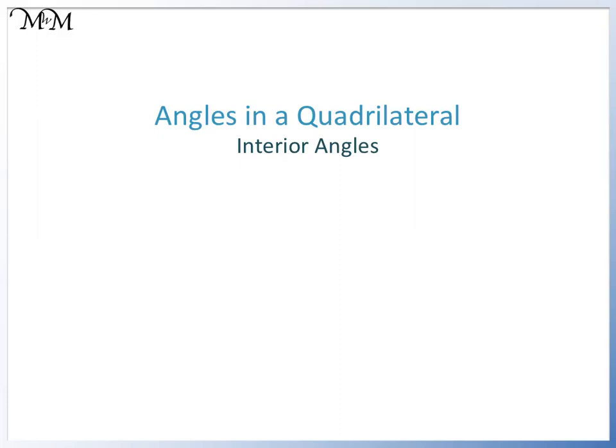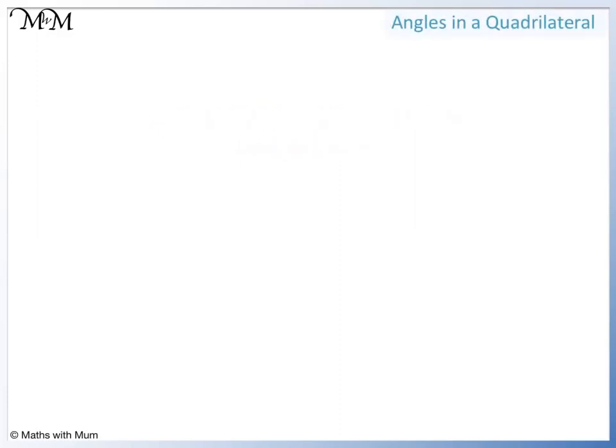Hi and welcome to our lesson on interior angles in a quadrilateral. To find the sum of the interior angles in any polygon, we start with the number of sides. Subtract 2 and then multiply by 180 degrees.